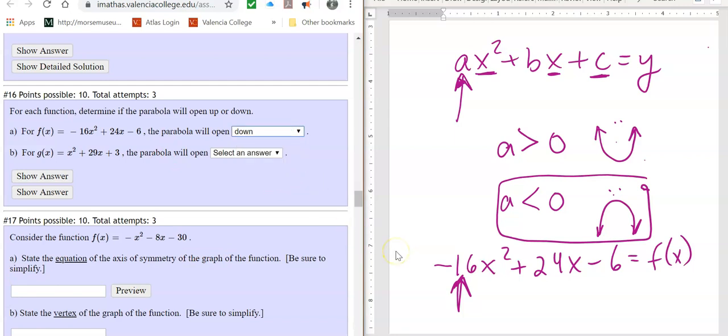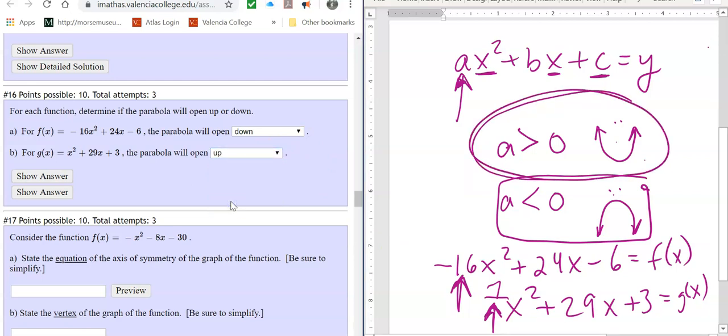Okay, the next one, it says x squared plus 29x plus three, and look at the number in the front, the coefficient in the front. Well, there is none. What is it? What is the number? Well, there is none. Well, that's a one. We just didn't write it, right? So it's a one. It's a positive one, so it's going to open up. Positive numbers, positive people, they smile, they open up, okay?